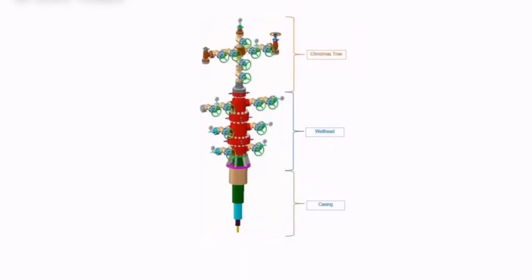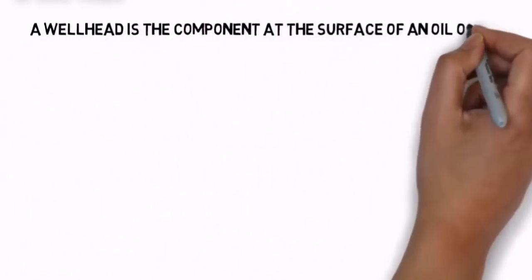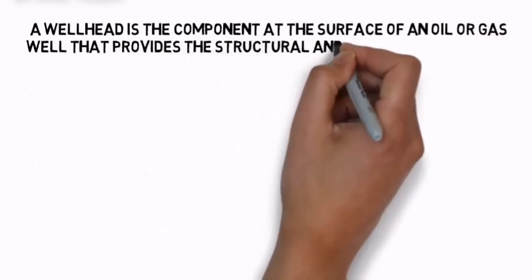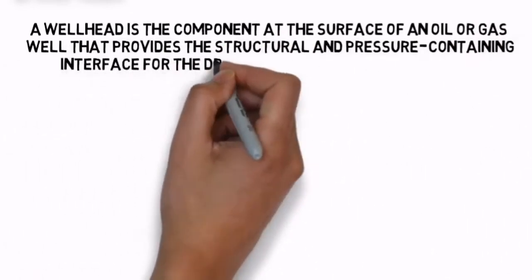A wellhead is the component at the surface of an oil and gas well that provides the structural and pressure-containing interface for the drilling and production equipment.